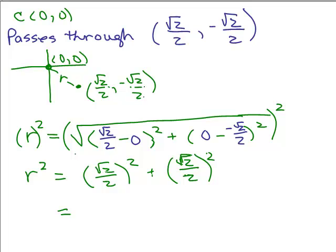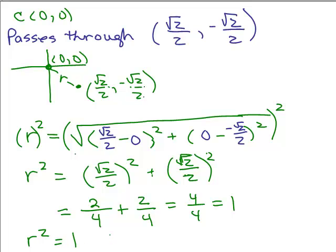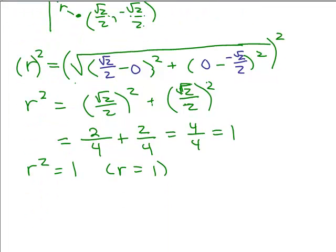So I've got to square the numerator and the denominator. Square root of 2 times square root of 2 is 2, and 2 times 2 is 4, so that's 2 fourths. And this next term is exactly the same — they're both square root of 2 over 2 squared — so that's another 2 fourths. Which is 4 fourths, which is 1. This is exactly like the previous problem. We have r squared equals 1, which means the radius of the circle is 1. So the equation of the circle — center at the origin, radius of 1 — is x squared plus y squared equals 1.